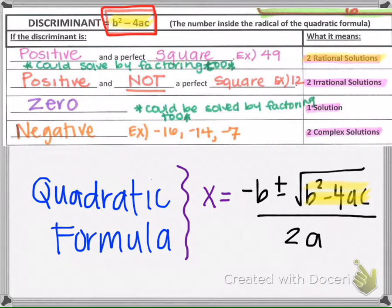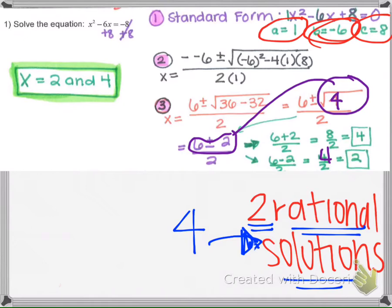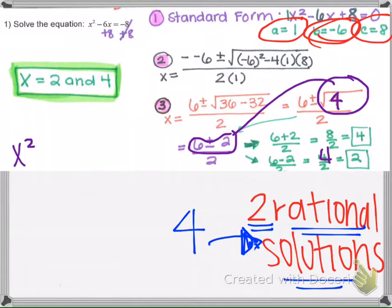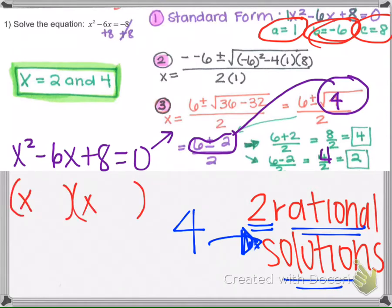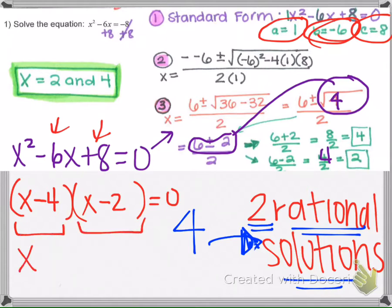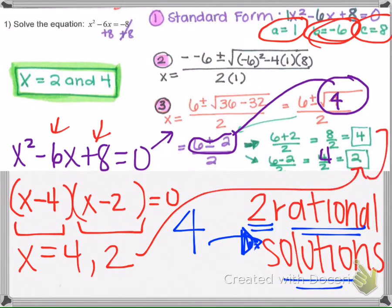When the discriminant is a positive perfect square, that also tells us that we could solve the equation by factoring instead. Since the discriminant was 4 — a perfect square — we could have taken x squared minus 6x plus 8 and factored it instead of using the quadratic formula. Numbers that multiply to 8 and combine to negative 6 are negative 4 and negative 2. Setting each factor equal to 0 gives x equals 4 and x equals 2, exactly what we got using the quadratic formula. So if the discriminant is a perfect square, the equation was factorable.